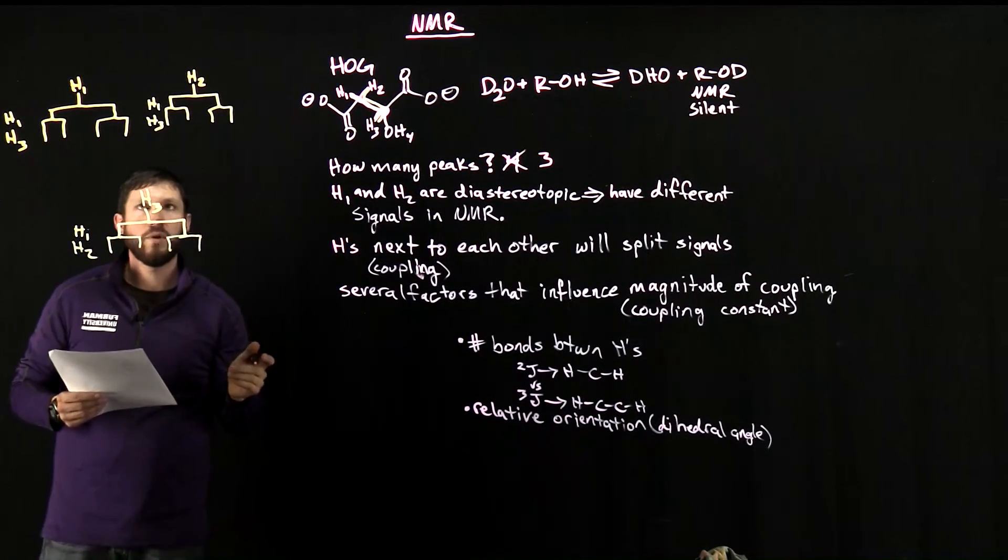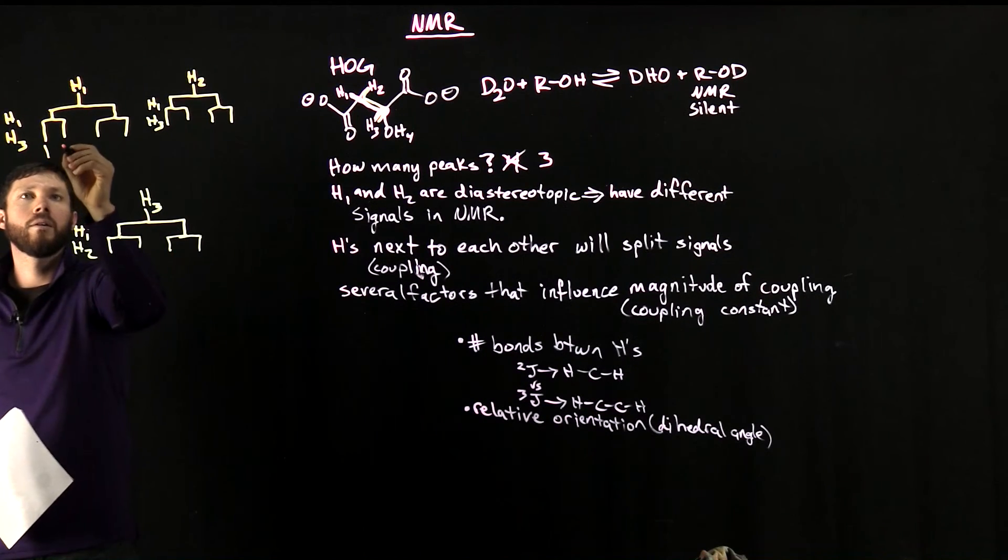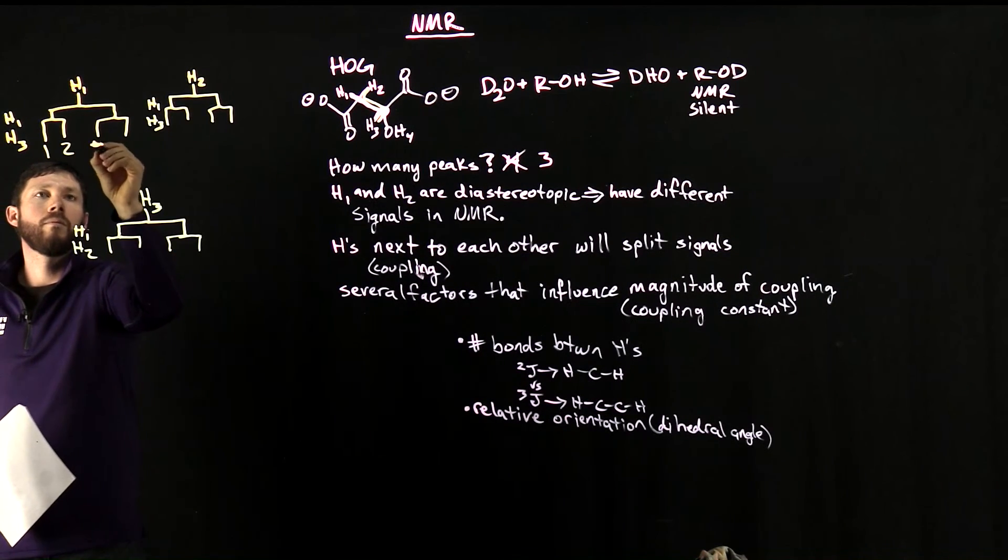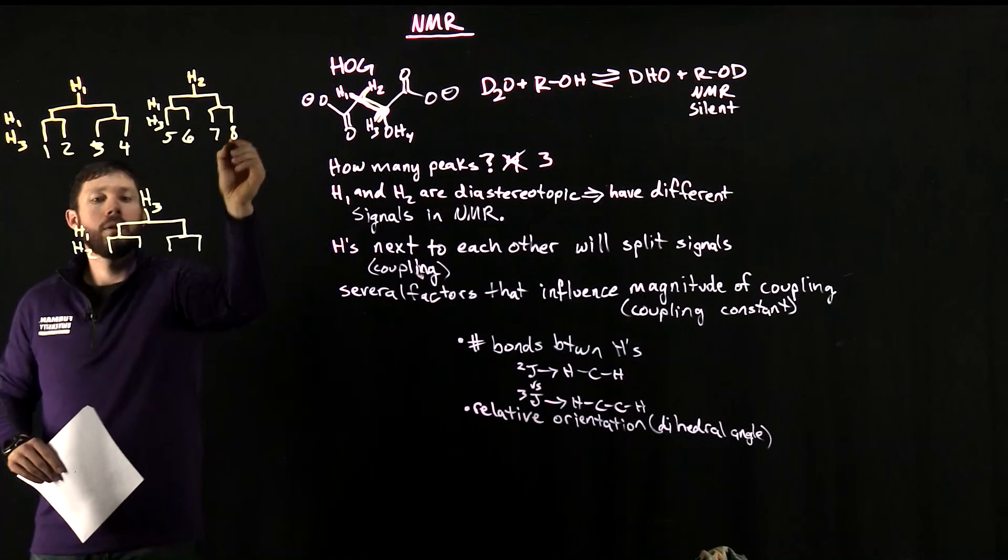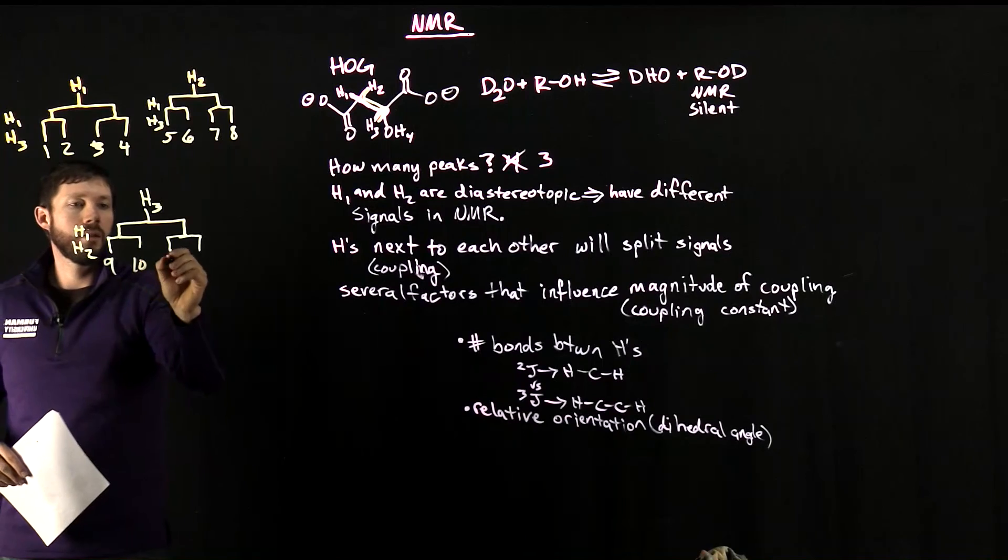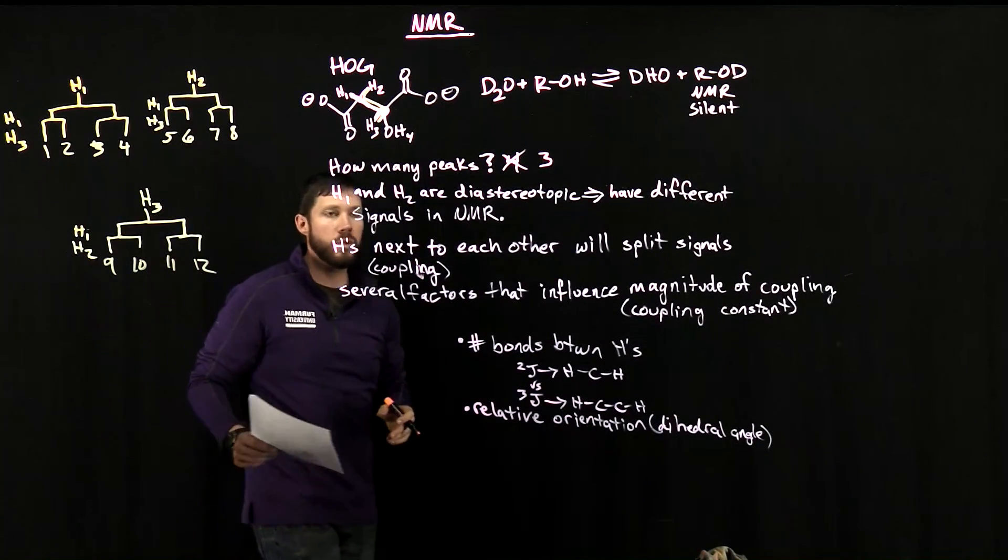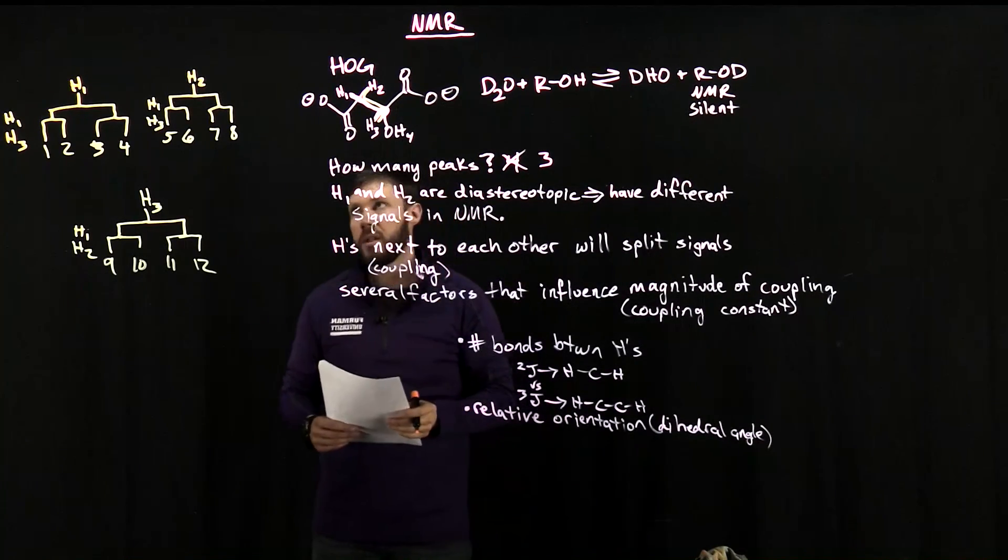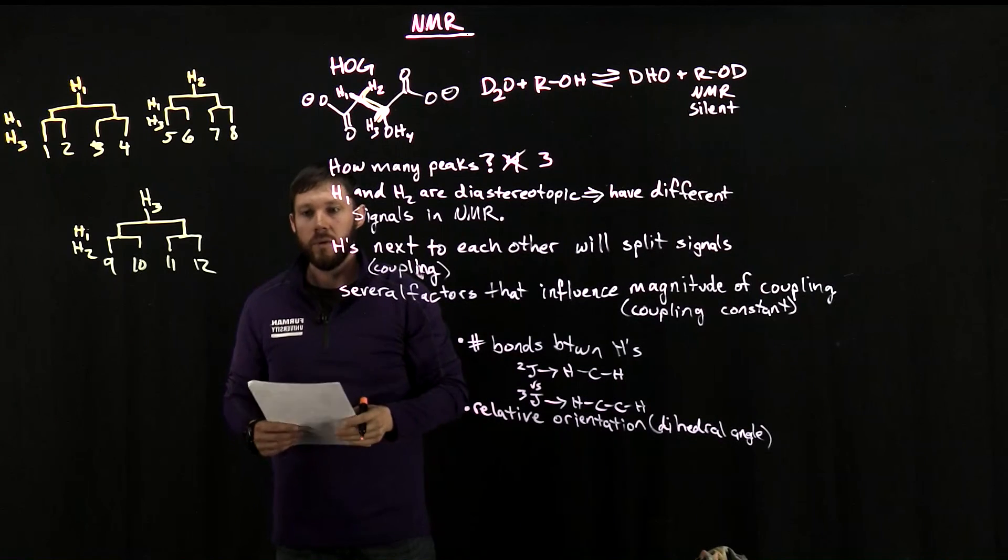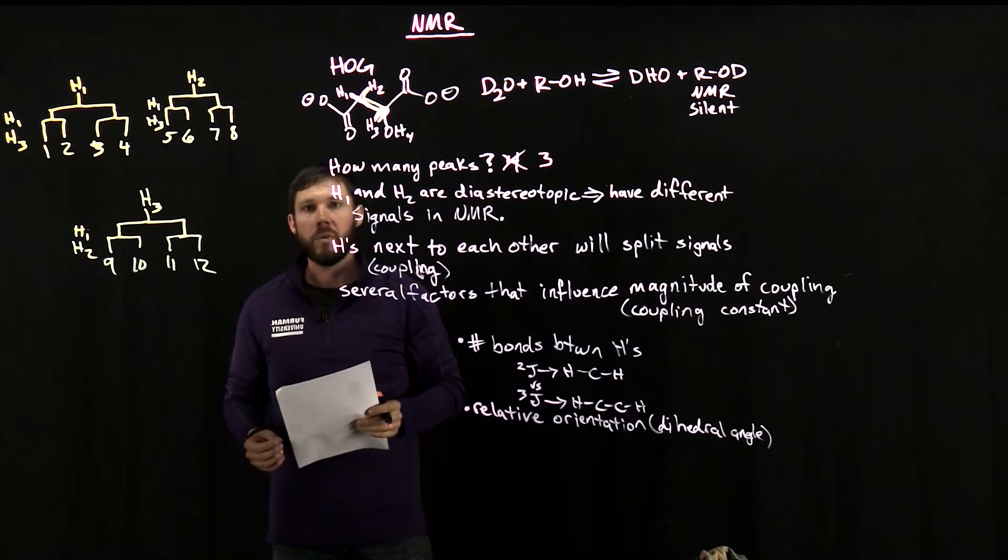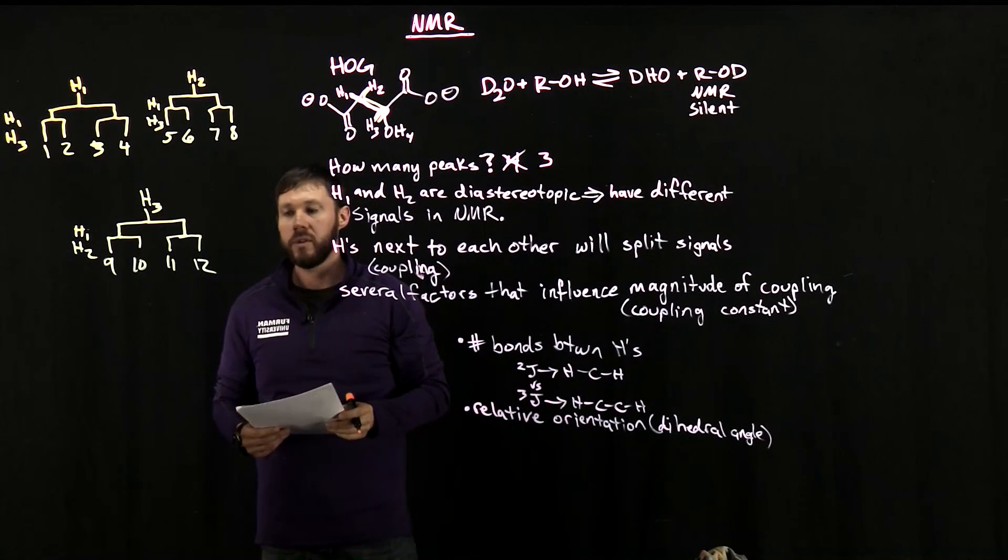So now we can go through and count all these up to figure out how many peaks we should see in our NMR. So based on this information, it looks like we should see about 12 different signals in our NMR spectra for our final product. So I'm going to look to you to take this information and investigate the actual NMR spectra you have and see if this holds true.